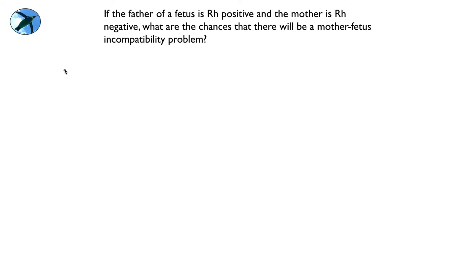So the father is Rh positive. Now hopefully you've seen enough examples now that you know there are two ways you could be positive. He could be homozygous or he could be heterozygous. The mother is Rh negative, so we know what she is. So what we're trying to do is come up with all the possibilities that will give us a fetus that is Rh positive, because that's the incompatibility problem. The problem is if the mom is negative and the fetus is positive.